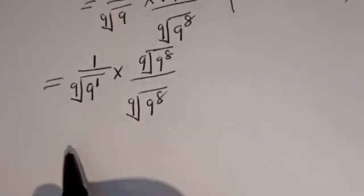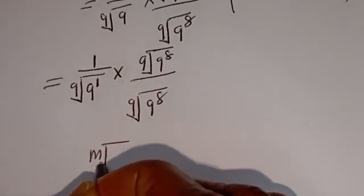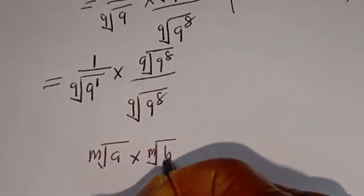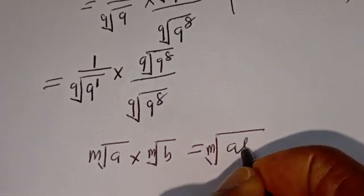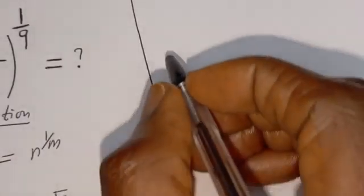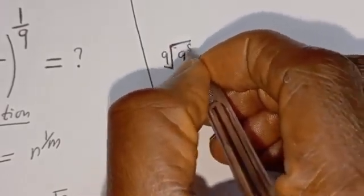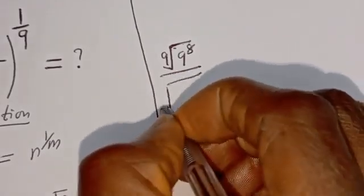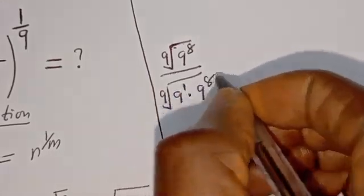Now take note of this identity: if you have the m-th root of a multiplied by the m-th root of b, this is equal to the m-th root of a times b. Then this relates to us having the 9th root of 9 to the power of 8, divided by the 9th root of 9 to the power of 8.